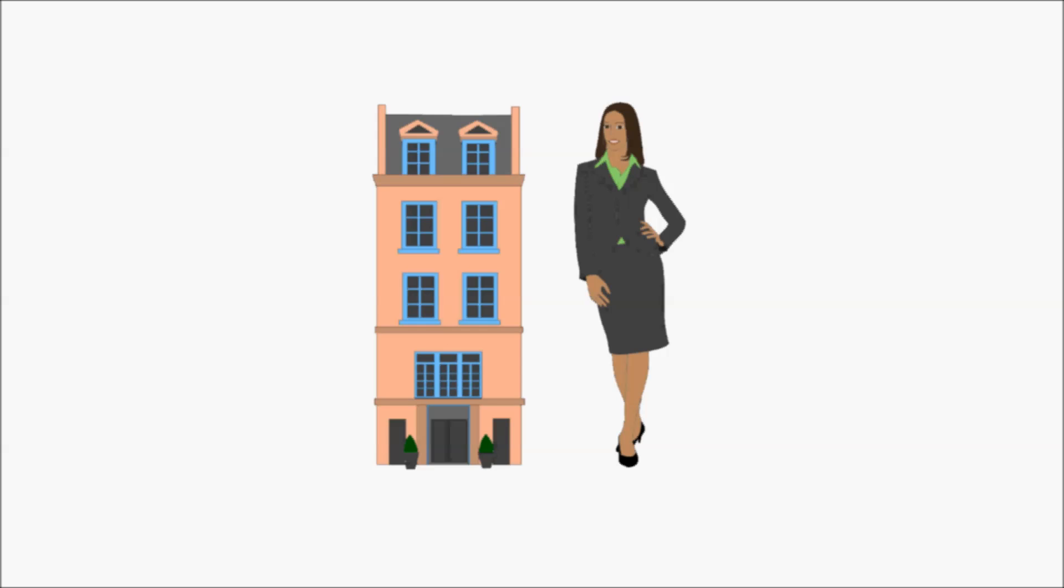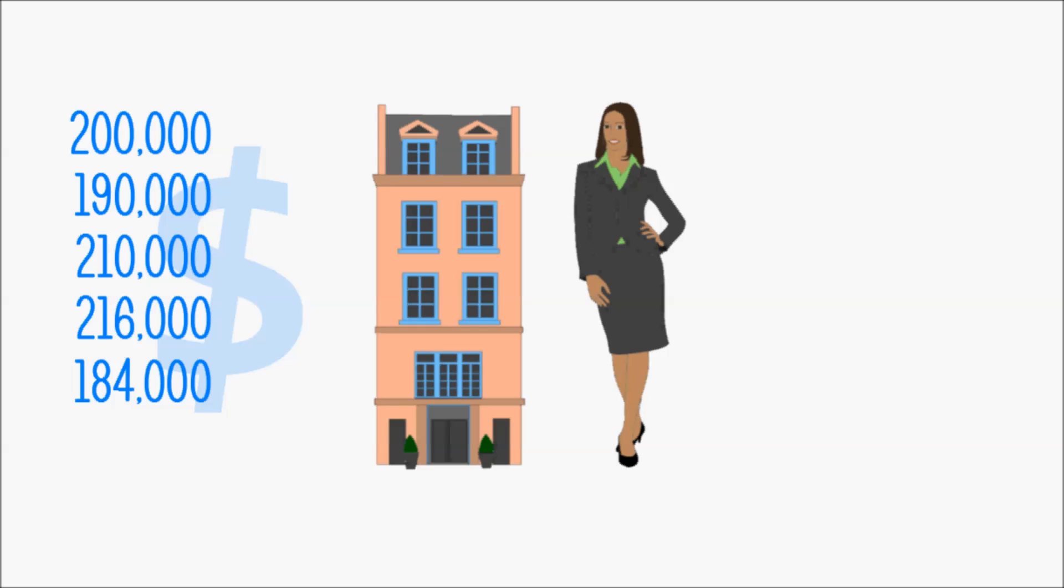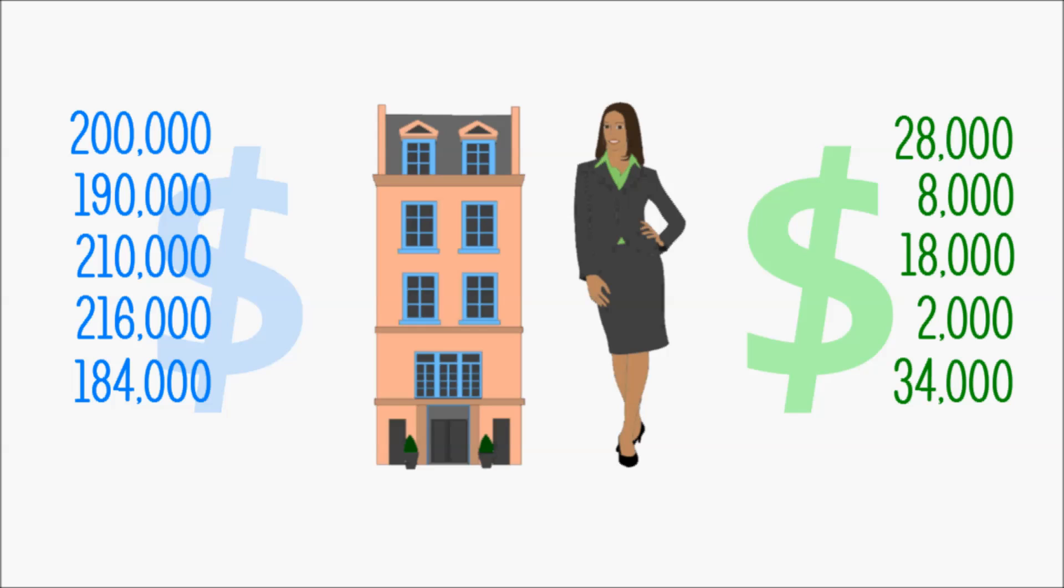Let's further assume that Patrick's agency over the past five months collected revenues of $200, $190, $210, $216, and $184,000. While Anna collected revenues of $28, $8, $18, $2, and $24,000.